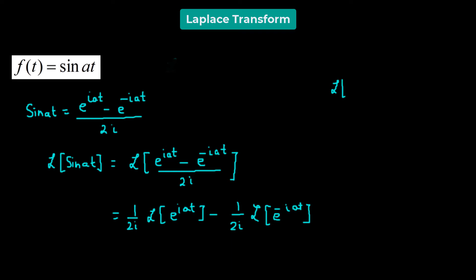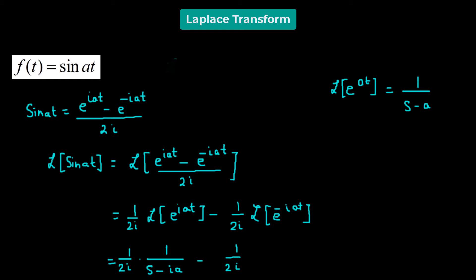Now we know that the Laplace transform of e raised to the power of a·t is simply given by 1 over s minus a. So we have 1 over 2i times 1 over s minus i·a, minus 1 over 2i times 1 over s minus of negative i·a.